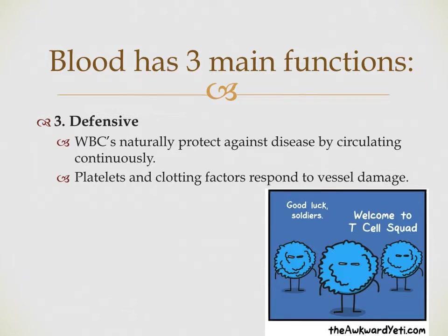Function number three for blood is the defensive function, and we'll spend a lot of time on this because it's a major focus of hematology — the white blood cell population. White blood cells are the body's defense mechanism, constantly circulating to protect against disease. Neutrophils, basophils, eosinophils, lymphocytes, and monocytes continuously identify and attack foreign invaders like bacteria, viruses, and fungal elements. We also have the defense of platelets and clotting factors to respond to blood vessel or endothelial damage via the coagulation cascade.